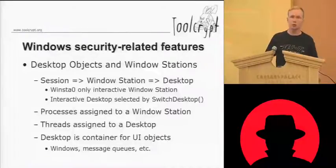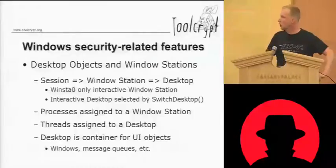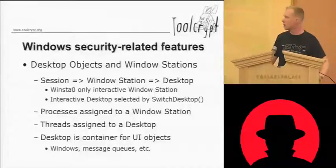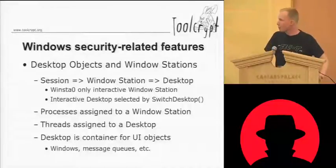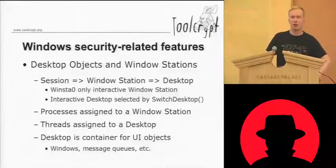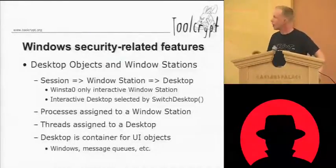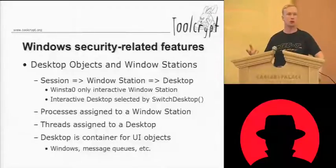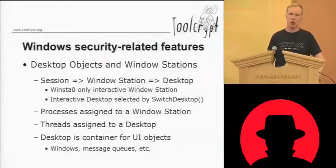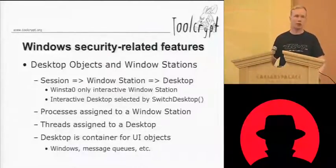Processes belong to a Windows Station, so they map at that level. But threads can be assigned to different desktops within that Windows Station. The desktop object is interesting because it's the lowest-level securable object in the GUI model, which means the desktop contains all the GUI objects — all the windows on your desktop, message queues for those windows, and all other GUI elements. But within a desktop, there is no access control whatsoever.